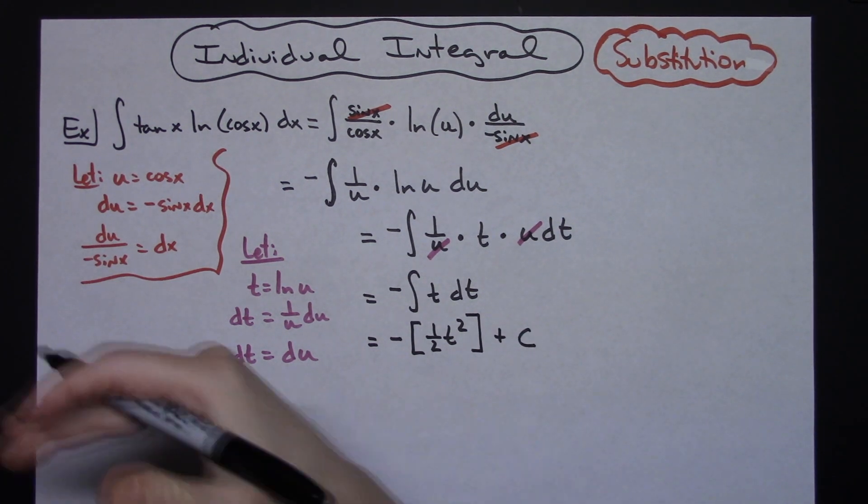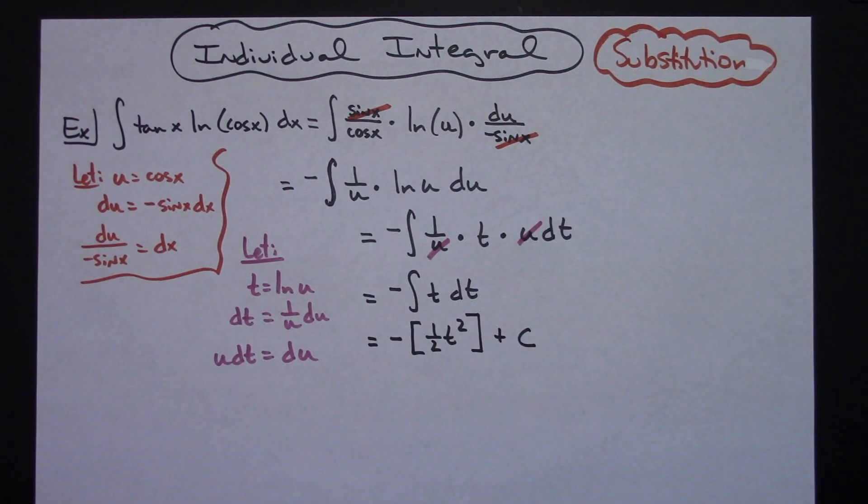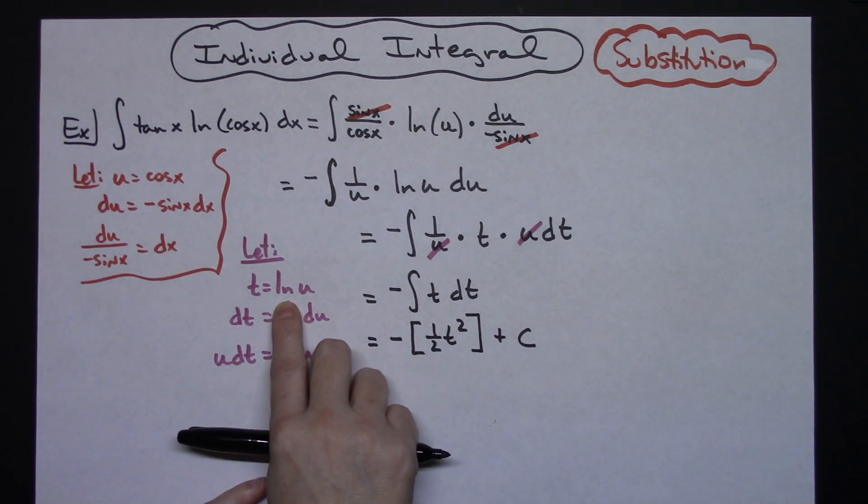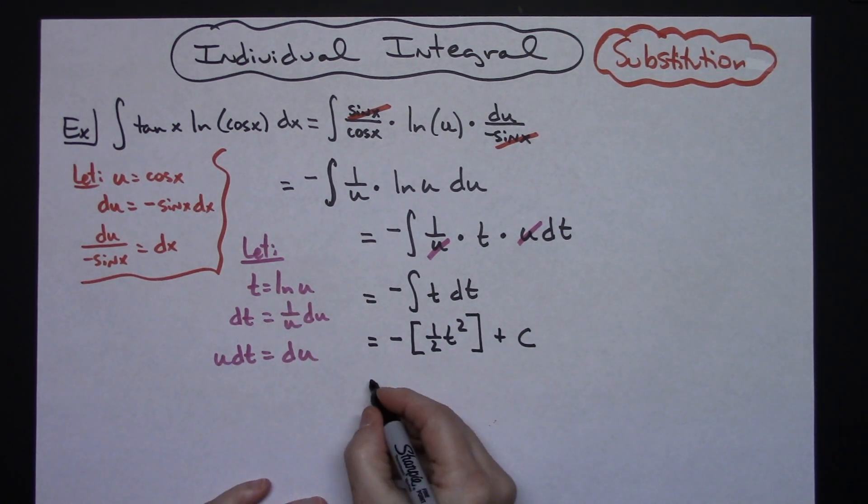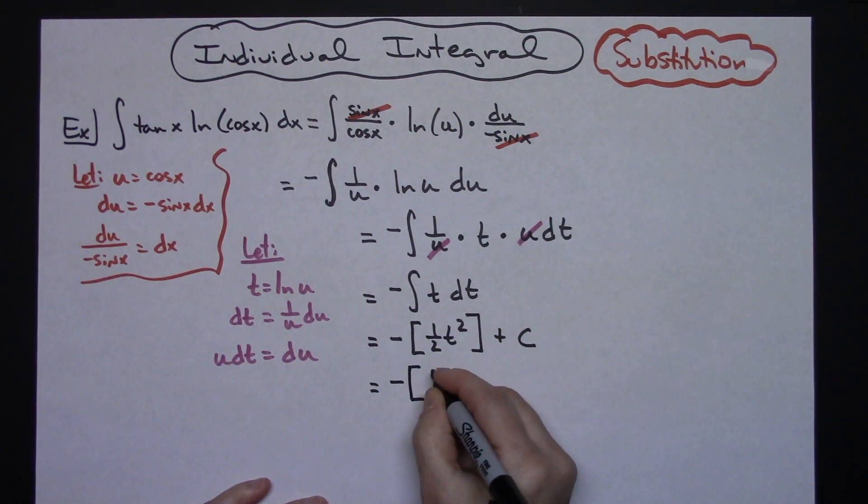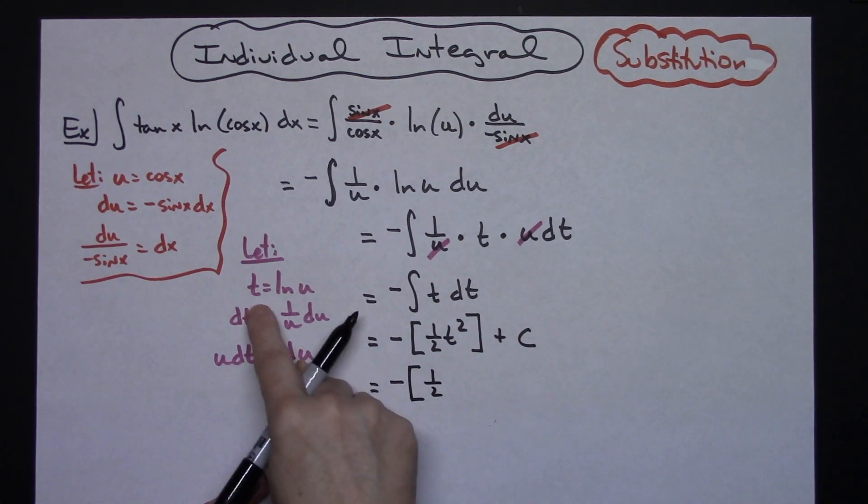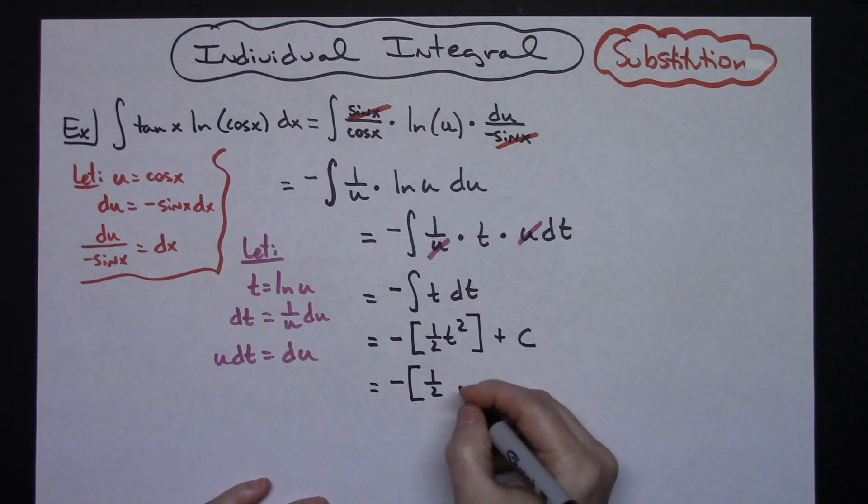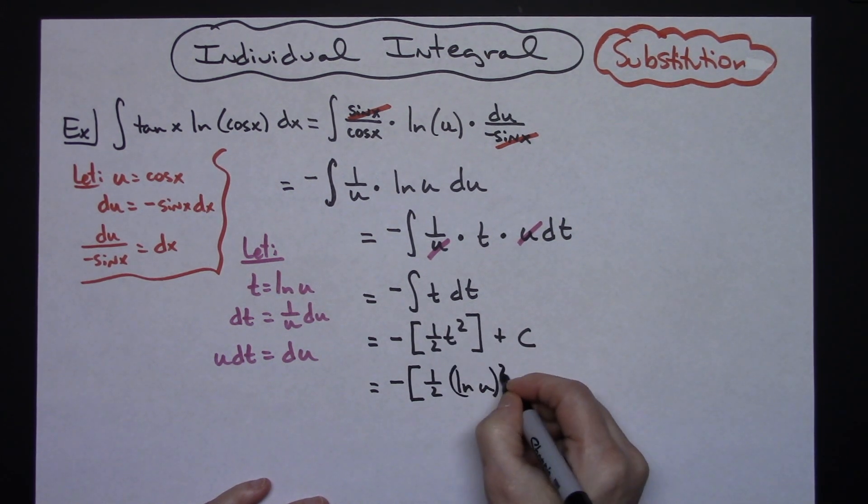So now it's just a matter of backtracking and putting everything back in. For this t right here, I need to put in the natural log of u. So the negative is still going to be out there in front. I'm going to have a 1 half t is a natural log of u. So natural log of u. It is being squared.